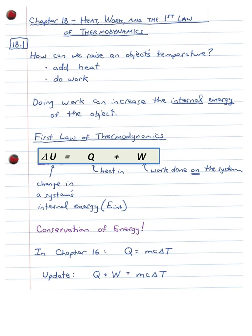The important concept here is that doing work can increase the internal energy of an object. This brings us to the first law of thermodynamics — a pretty simple equation that will govern much of what we do in this chapter. It's this: ΔU = Q + W. ΔU is the change in a system's internal energy. In the book you may see it as internal energy or E with a subscript INT. The way I write it is just with a capital U — that is the internal energy.